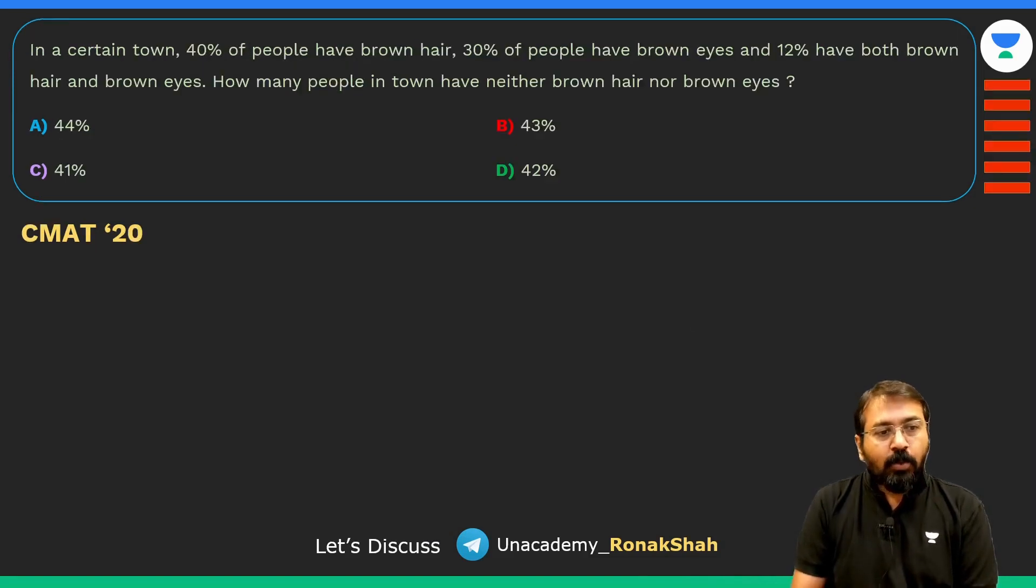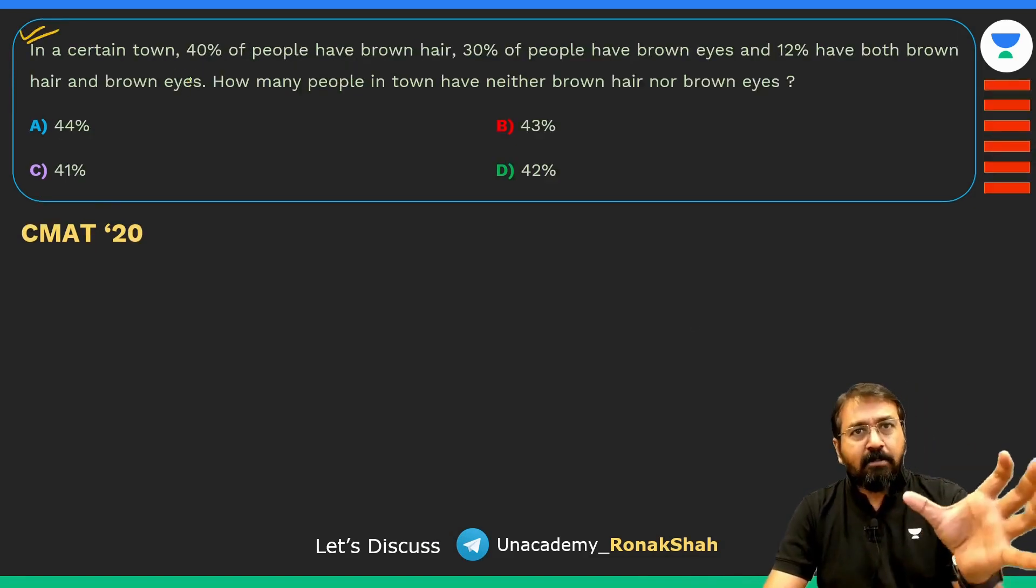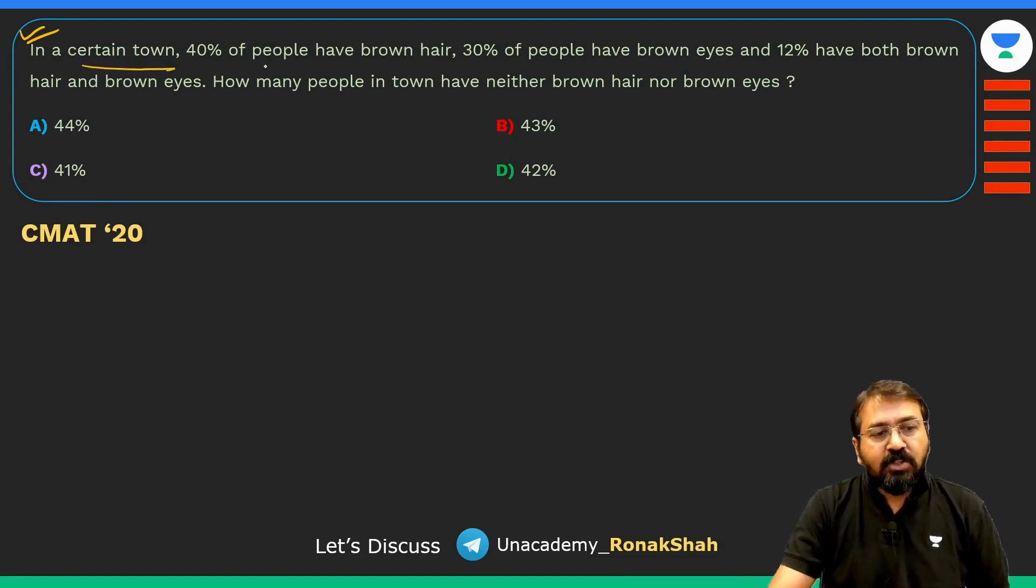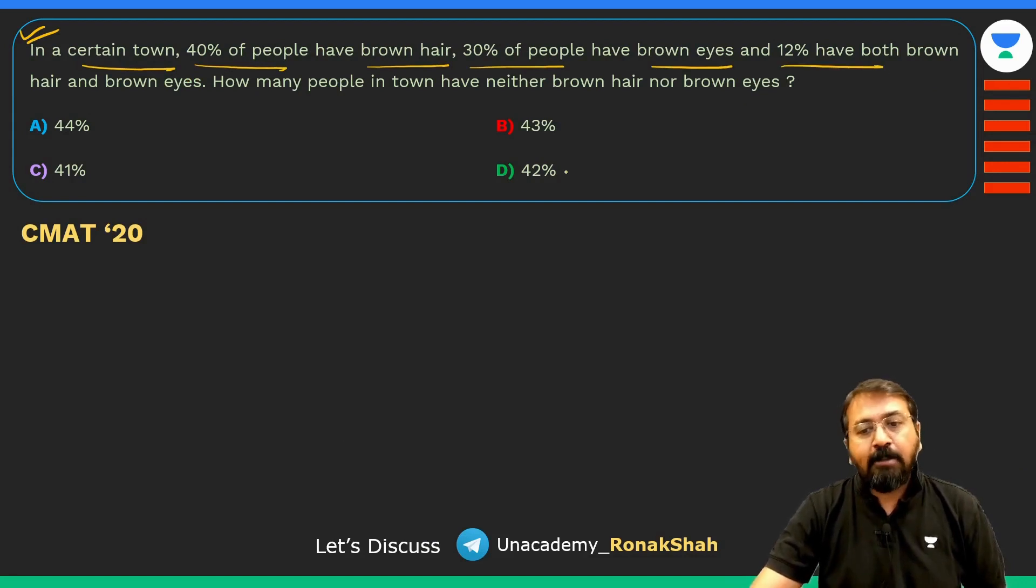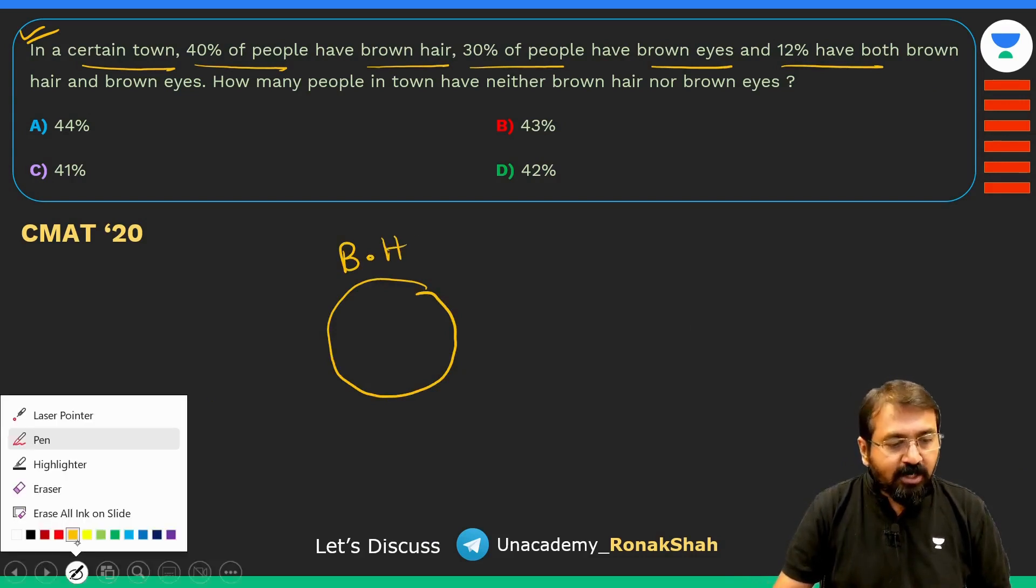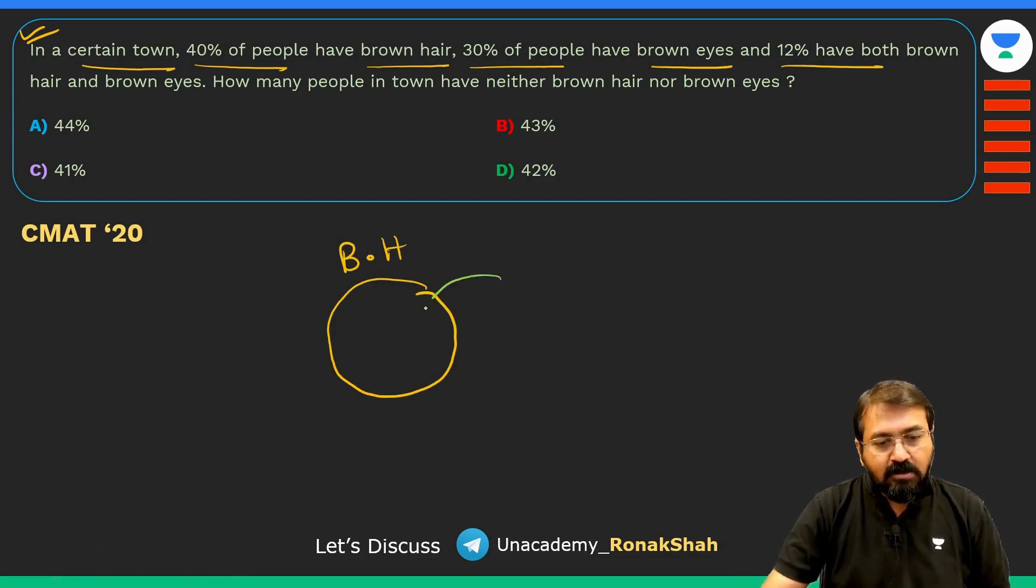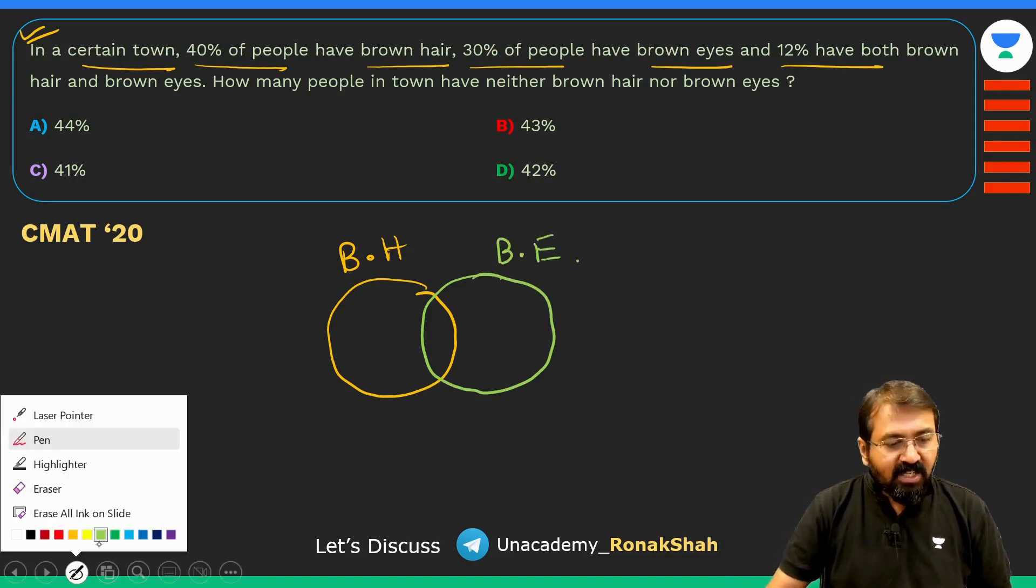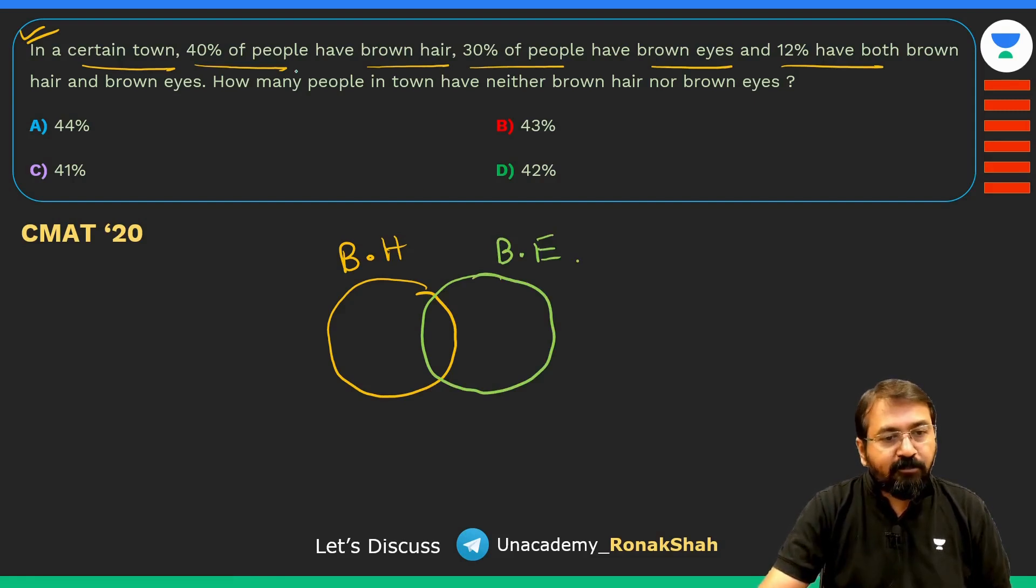Let's look at this question, very easy question. It requires a bit of Venn diagram approach. In a certain town 40% of people have brown hair, 30% of the people have brown eyes, and 12% have both. Let me represent it this way. Brown hair, brown eyes we are representing with some other color. They are saying 40% people have brown hair, so let's assume there are total 100 people in the town, so 40 have brown hair, 30 have brown eyes, and 12 have both.